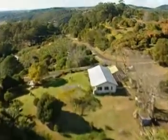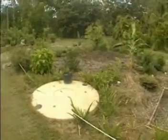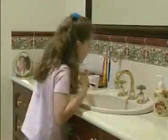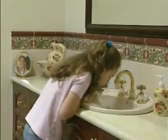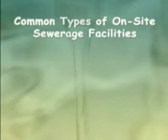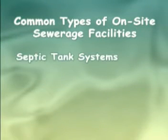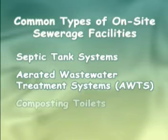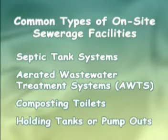On-site sewerage facilities are approved systems for the treatment and disposal of sewage and wastewater from toilets, bathrooms, kitchens and laundries on your property. The common types of on-site sewerage facilities are septic tank systems, aerated wastewater treatment systems or AWTS, composting toilets and holding tanks or pump-outs.